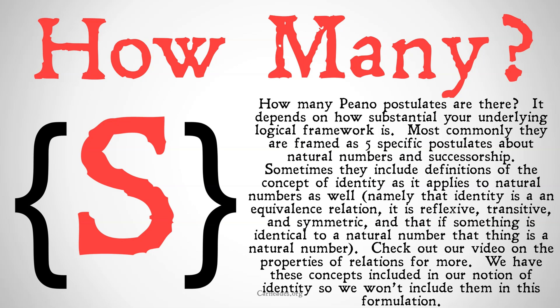How many Peano postulates are there? It depends on how substantial your underlying logical framework is. Most commonly, they are framed as five specific postulates about natural numbers, zero, and successorship. Sometimes they do include definitions of the concept of identity as it applies to natural numbers — namely, that identity is an equivalence relationship: it's reflexive, transitive, and symmetric, and that if something is identical to a natural number, that thing is a natural number. We don't need those because we already have those in our basic logical framework.